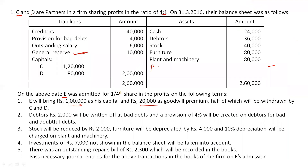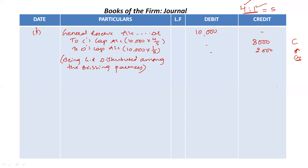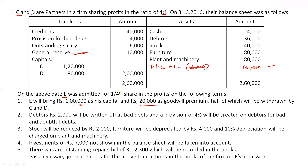Suppose there was a profit and loss account mentioned on the asset side with an amount of rupees 10,000. If P&L is on the asset side, it is a loss, not profit. This is also an undistributed loss and before admission we must distribute it. Since it is a loss, partners' capital reduces, meaning liability reduces. So we debit the partners' capital accounts and credit the P&L account. But we don't have this entry in this question, so we are not doing it here.